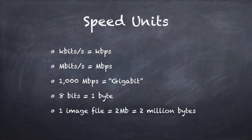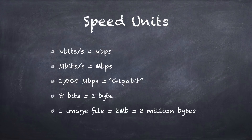Every byte has 8 bits, and we usually treat a byte as a single character, like a letter in a word processing document. An image file typically averages around 2 megabytes — 2 million bytes. So you can figure how long it would take to download: just a fraction of a second over a gigabit connection, or maybe a second or so over mobile for a full high-resolution image. Online images nowadays are usually optimized and much smaller than what your camera actually captures.